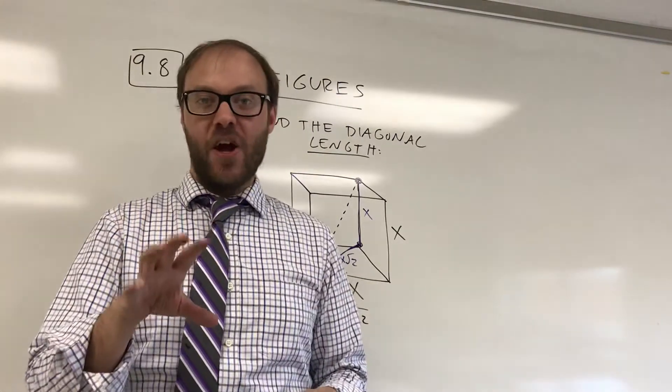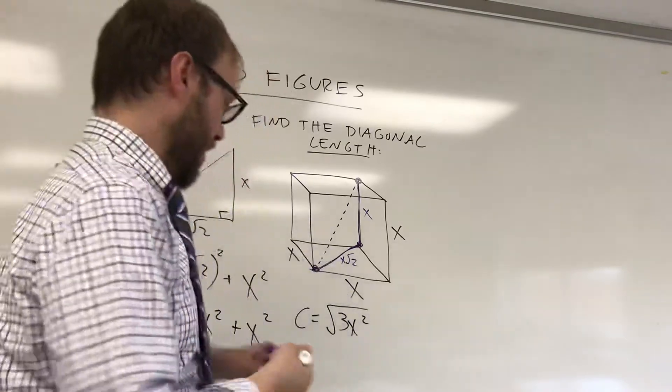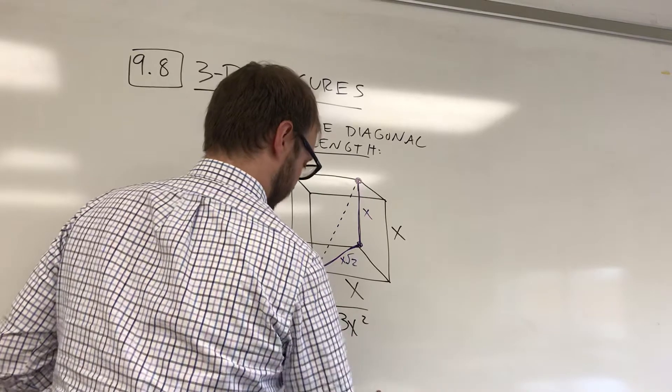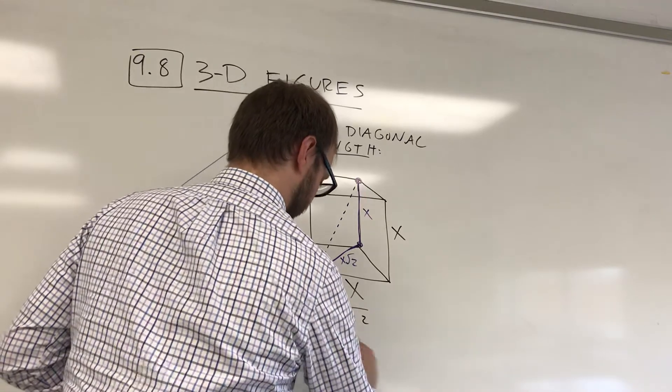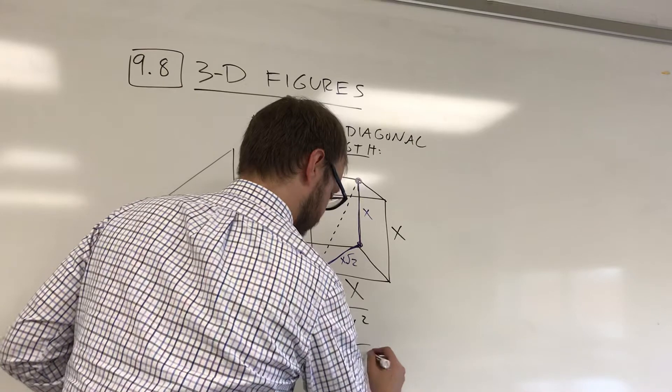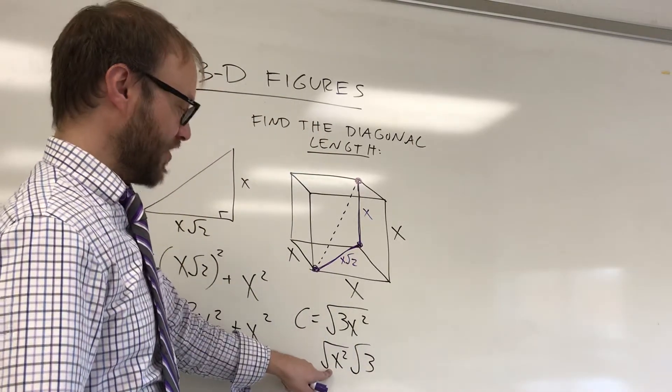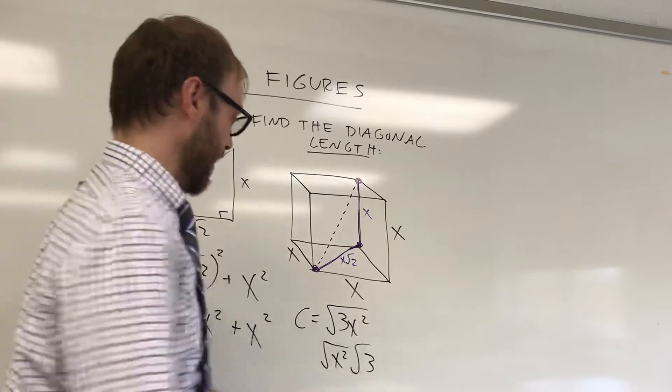This looks weird, but it can be broken down. Remember that you can break down a square root as a product of a perfect square, x squared, times another number. The square root of x squared is just going to be x, and it's getting multiplied by the square root of 3.